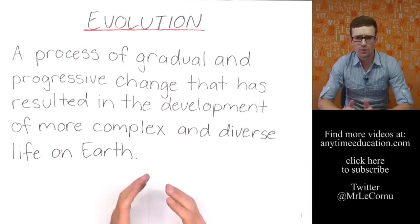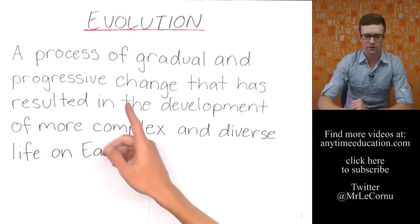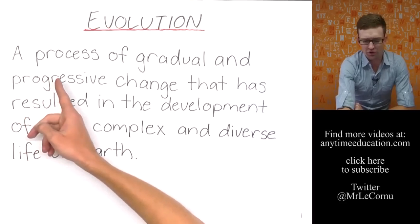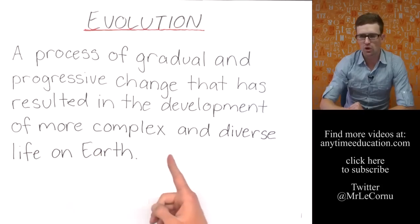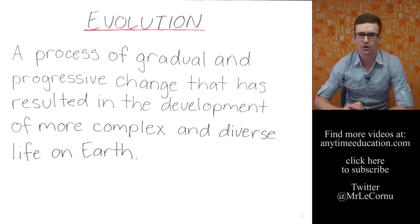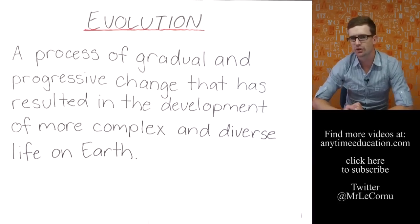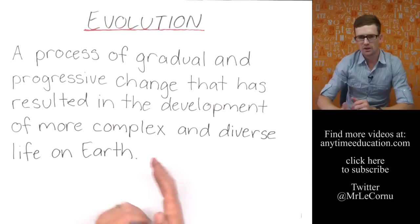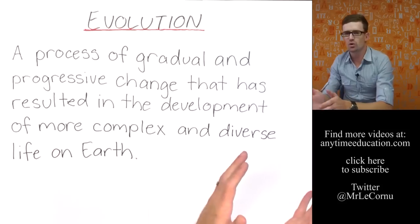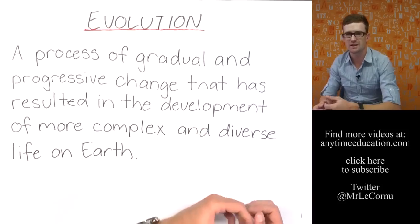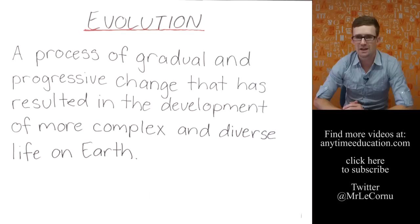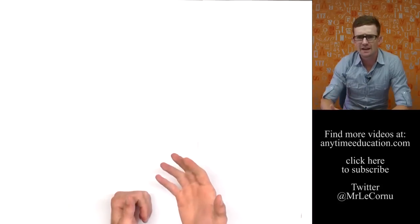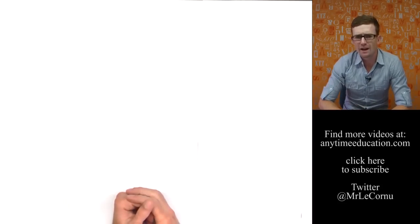So first of all we need a really clear definition for what is evolution. Here you can see evolution is a process of gradual and progressive change that has resulted in the development of more complex and diverse life on earth. In biology when we're talking about evolution we're talking about how over time life has gone from simple organisms to more complex and diverse, which means more types of organisms. It takes time and time is going to be a key factor that you need to consider when we're considering evolution.